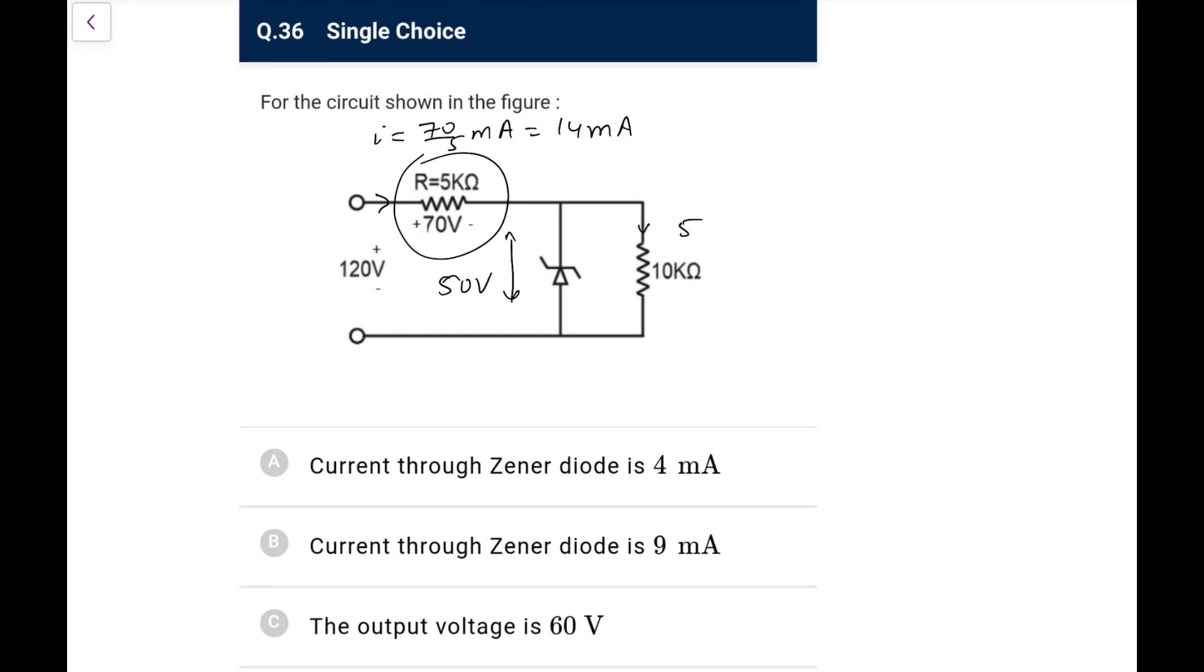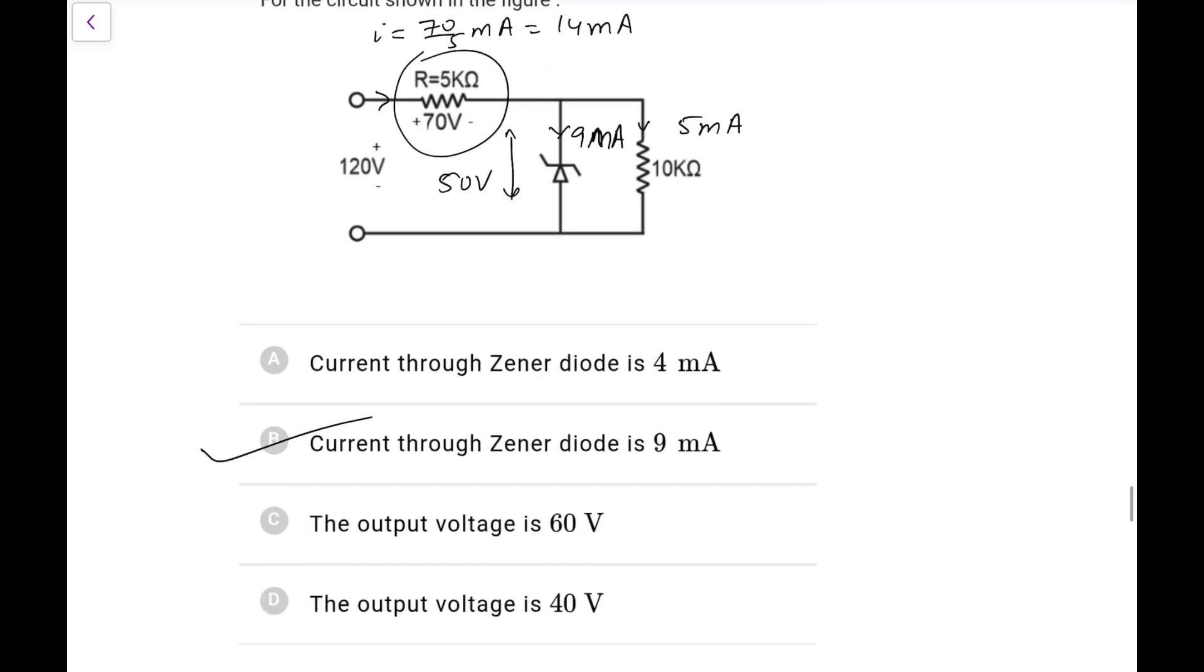So this is 50 over 10. So what we will have, we will have 5 milliampere. So the remaining from junction law would be 9 milliampere will go through the zener one. So the current through the zener is 9 milliampere, that is the answer. Output voltage is 50, not 60, not 40.